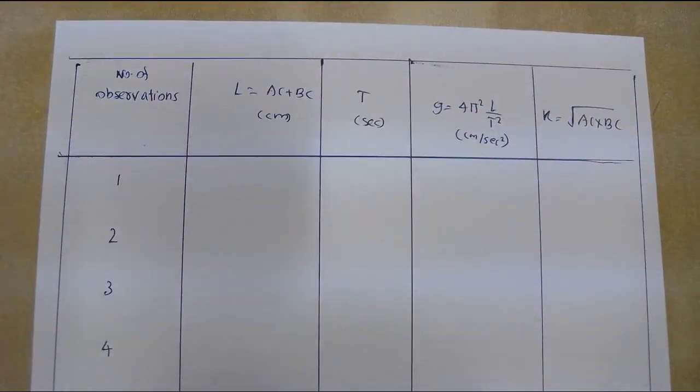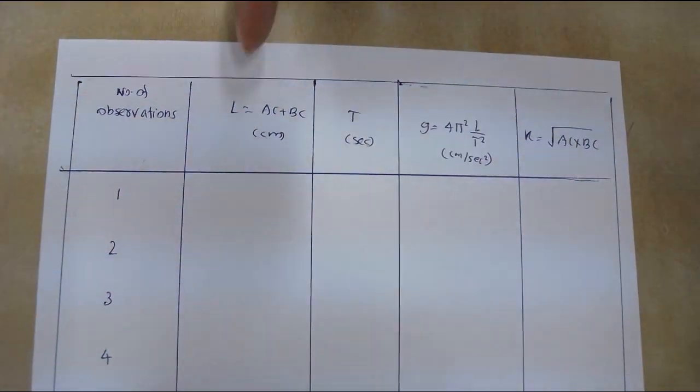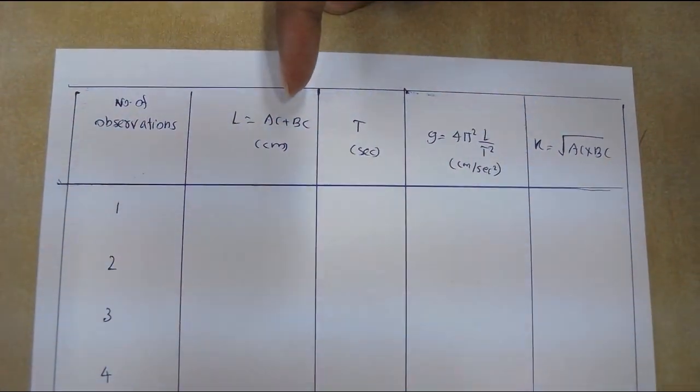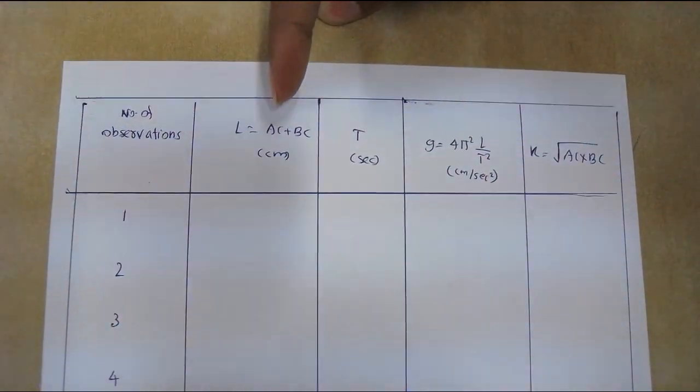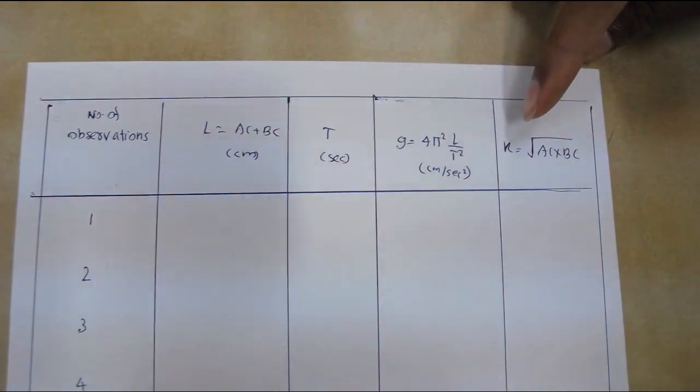Fill the second table with these values for each line in the plot: that is the length of equivalent simple pendulum, radius of gyration, and corresponding time period.